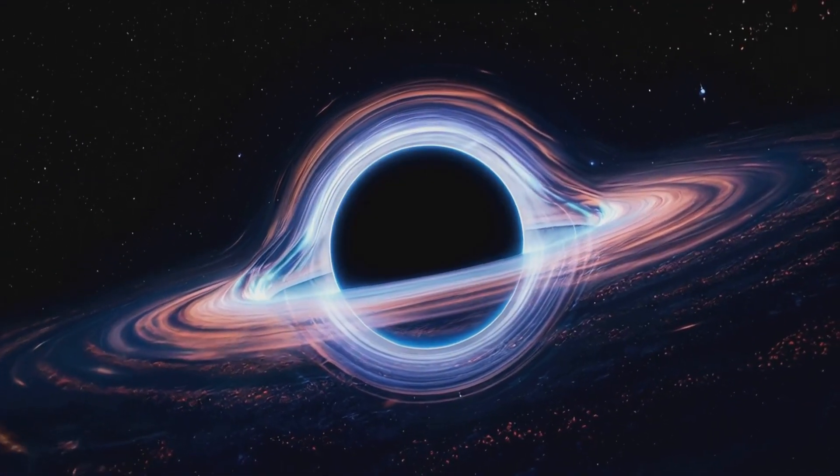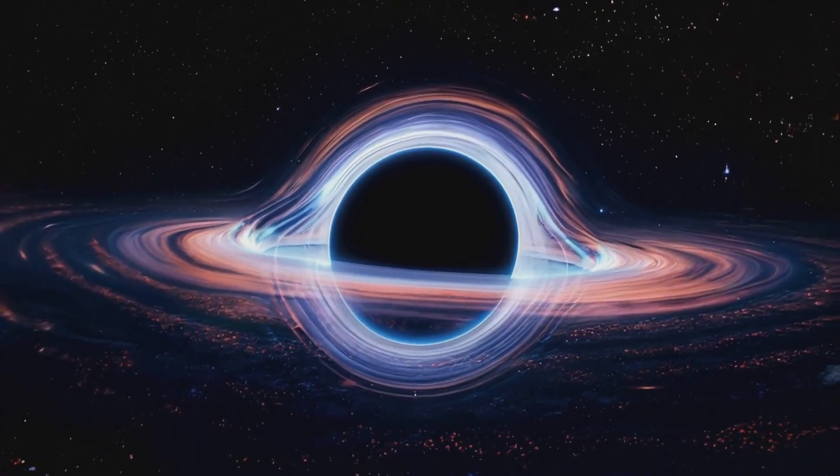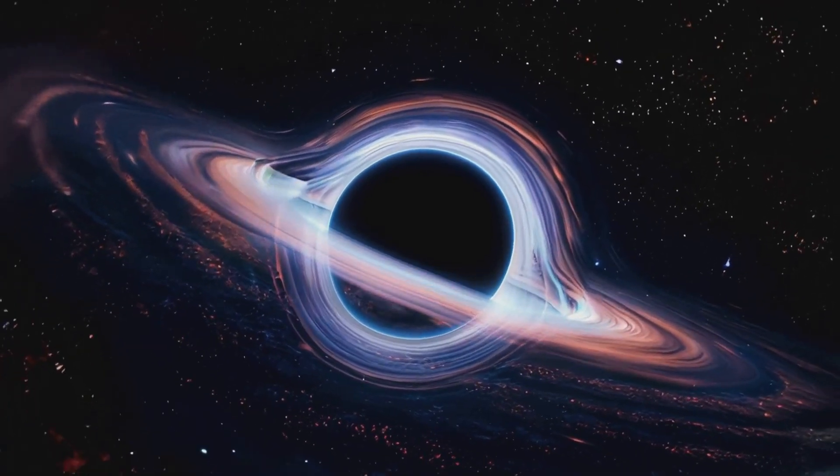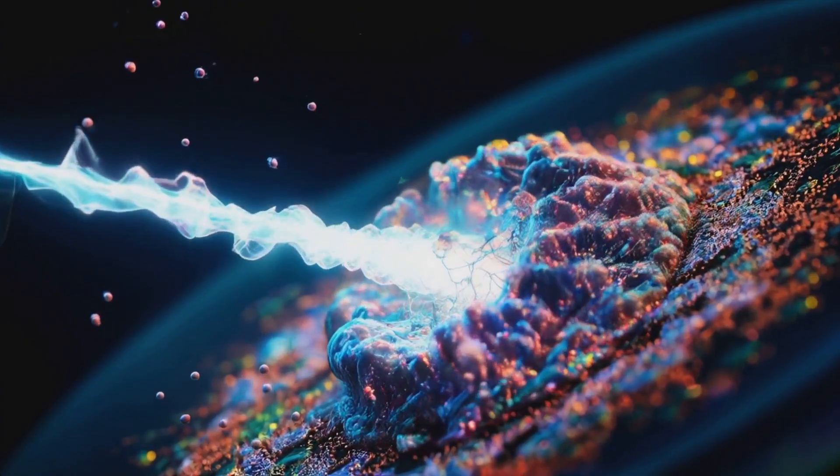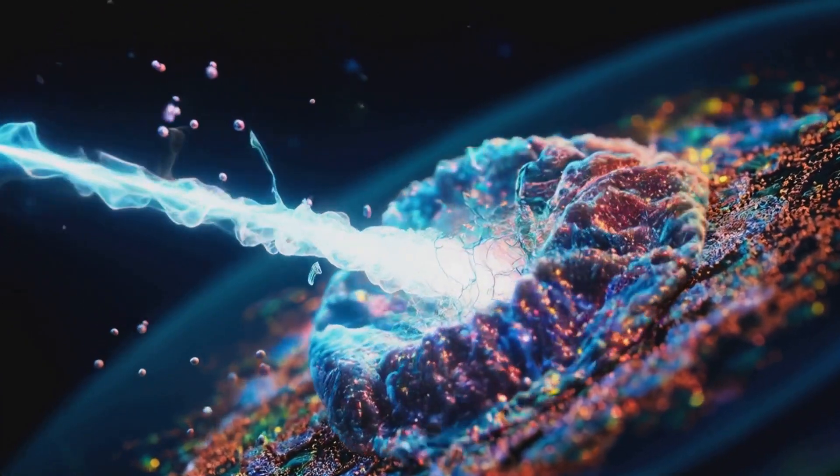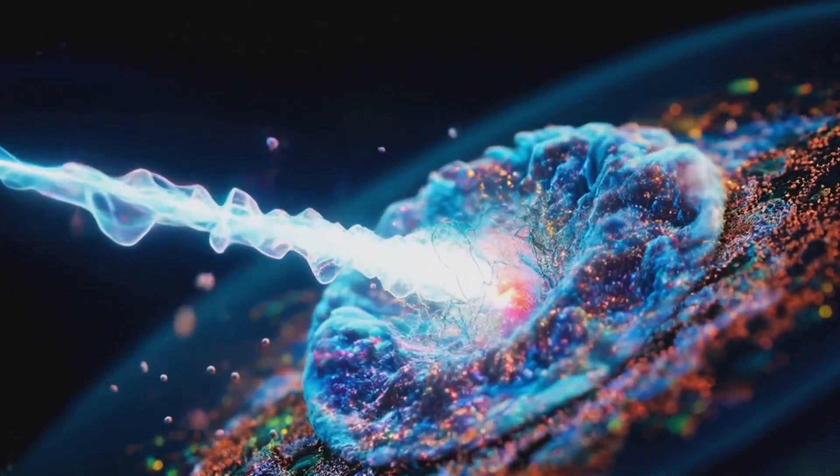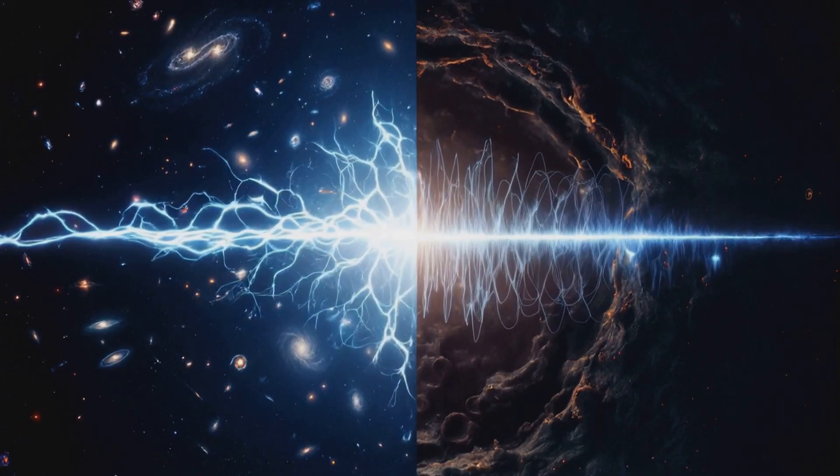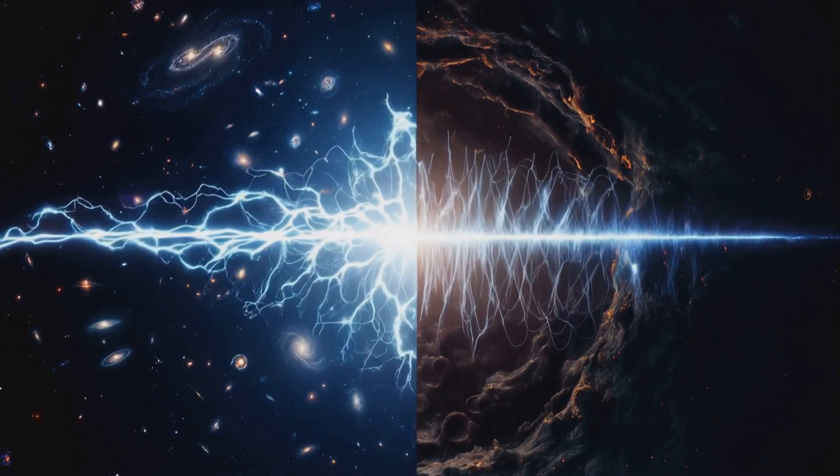Hawking radiation serves a dual purpose as both the writer and the reader of the universe. As the writer, it projects quantum states, creating intricate cosmic patterns. As the reader, it collapses quantum wave functions, observing and solidifying what is real.